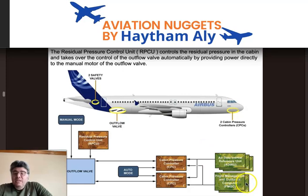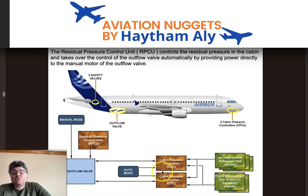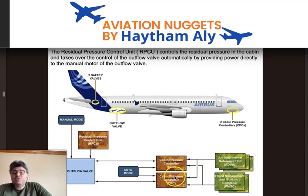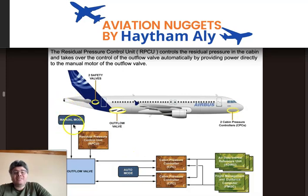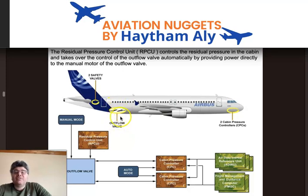As a summary: the FMGC is needed because the cabin pressure controller always requires airport elevation from the navigation database. The ADIRU supplies aircraft altitude to the cabin pressure controller. We have two automatic systems and one manual system to control the outflow valve. Cabin pressure controllers are located in the avionics compartment, and one outflow valve exists for the single aisle family.